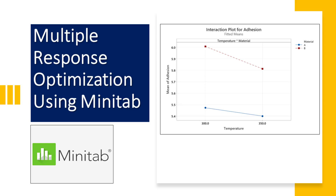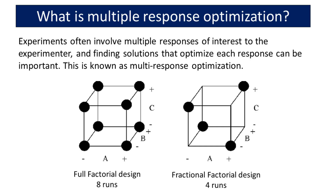I am honored to have the opportunity to speak to you today about the topic of multiple-response optimization using Minitab. This is a subject that holds great importance in the field of research and analysis. Multi-response optimization is a crucial aspect of many experiments, particularly in fields such as engineering, chemistry, and biology. In these scenarios, it is common for the experimenter to have multiple responses of interest, and finding solutions that optimize each response is of great importance.